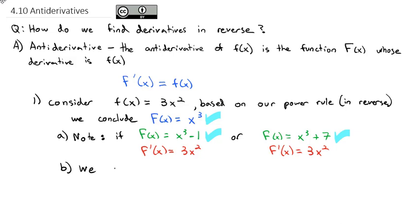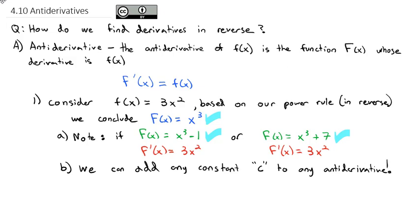We can add any constant — we'll call it c — to any anti-derivative. That means we need to note that in our final solution. So the anti-derivative of 3x squared is x cubed plus any constant c.